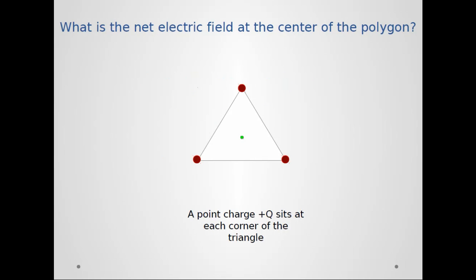So here's my setup. I give you an equilateral triangle. All the sides have the same length, all the interior angles are congruent, and on each corner I put a red point charge with charge plus Q. And I ask you what is the electric field at the very center of the polygon. That's the little green circle that I've drawn in there.